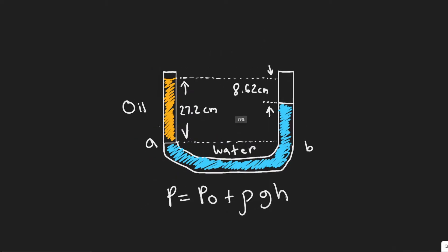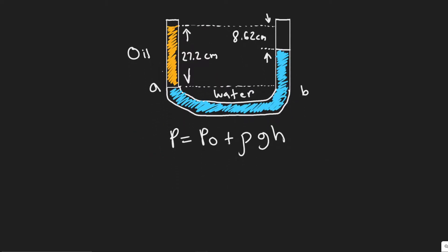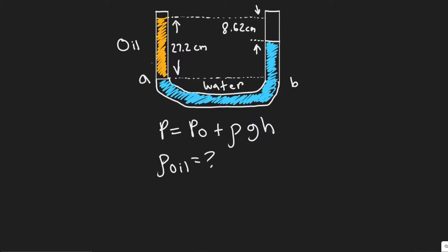And so what we're trying to find here is the density of the oil, which is basically we're trying to solve for the rho of the oil, where rho just represents density. It's just the Greek letter that we use to represent density.